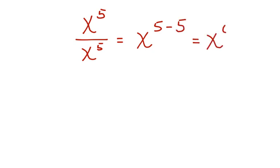So let's say you have a situation like this one, x to the 5th divided by x to the 5th. We know that we're going to subtract these because our bases are the same. So we have x to the 5th minus 5 equals x to the 0 power, which equals 1.